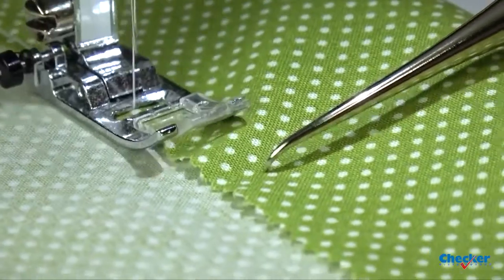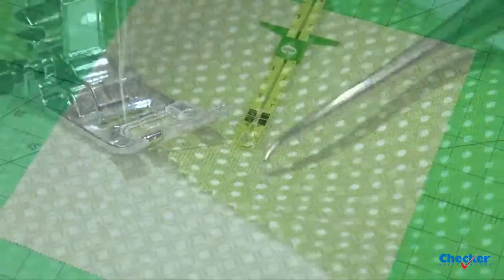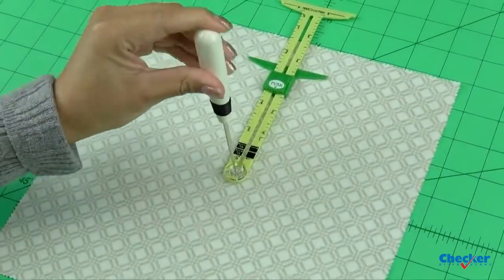We can use them to mark the placement of buttonholes, darts, or pleats in our fabric. They can be used to unpick threads.